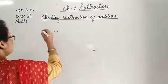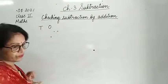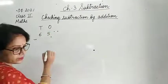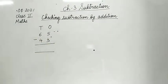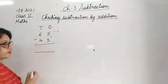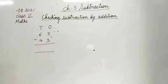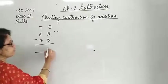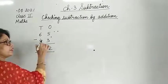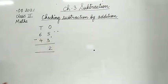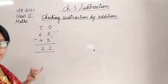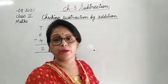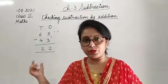Example first - we will take 1s and 10s. The question is 65 minus 43. We have to subtract: 3 from 5, what will you get? Take away 3 from 5, we will get 2. And now again subtract 4 from 6 - you will get 2. So our answer is 22.